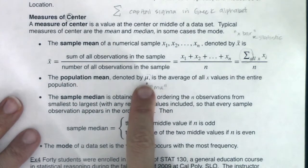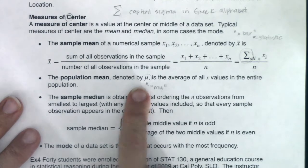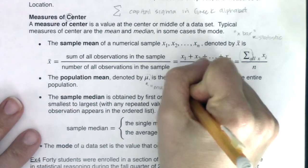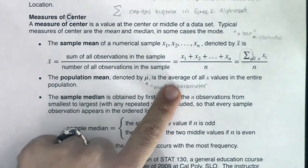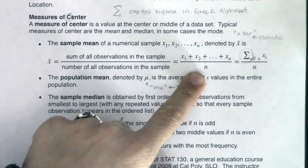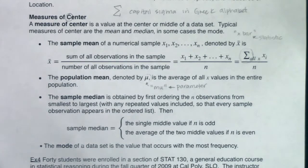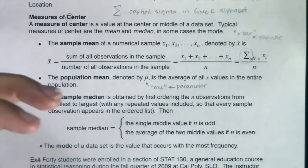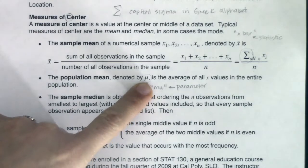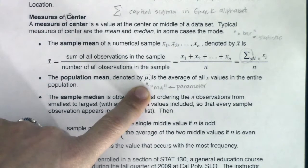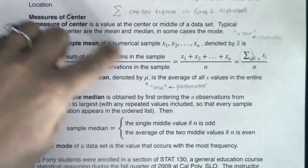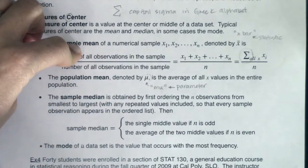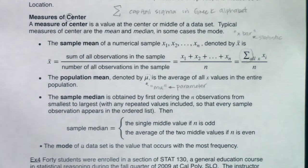Is mu a statistic or a parameter? Keep in mind, it's coming from the population — so this is actually a parameter. The only way to find the parameter is to run the census. If I take the average of all values in the entire population and divide by the population size, that would be mu. For example, if I had all 30 students in a class and divided by 30, that's mu — the population mean. A sample mean would be if I randomly chose five students, added their scores, and divided by five.